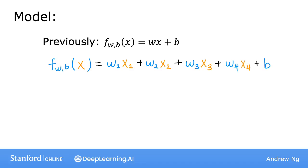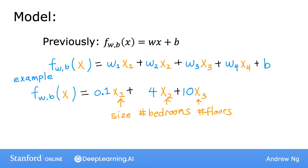Concretely, for housing price prediction, one possible model may be that we estimate the price of the house as 0.1 times x1, the size of the house, plus 4 times x2, the number of bedrooms, plus 10 times x3, the number of floors, minus 2 times x4, the age of the house in years, plus 80.